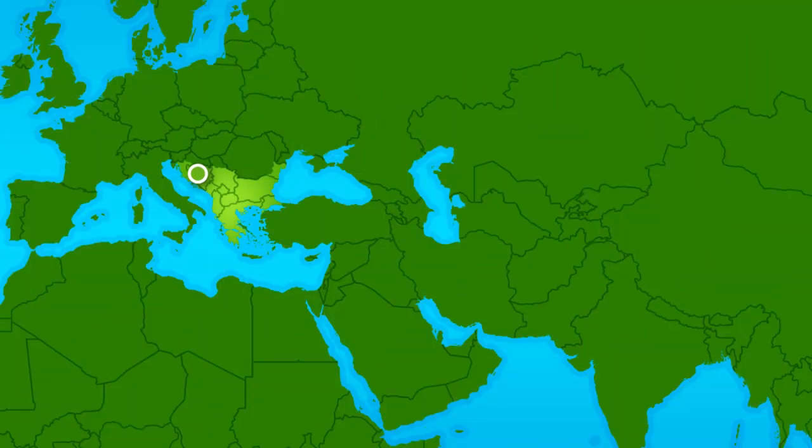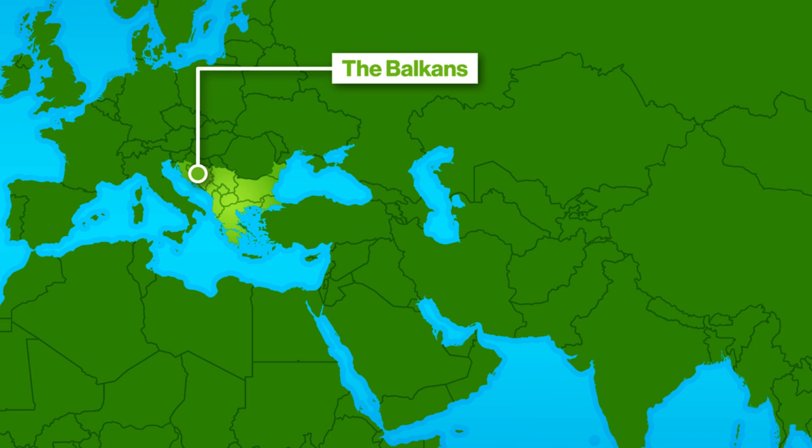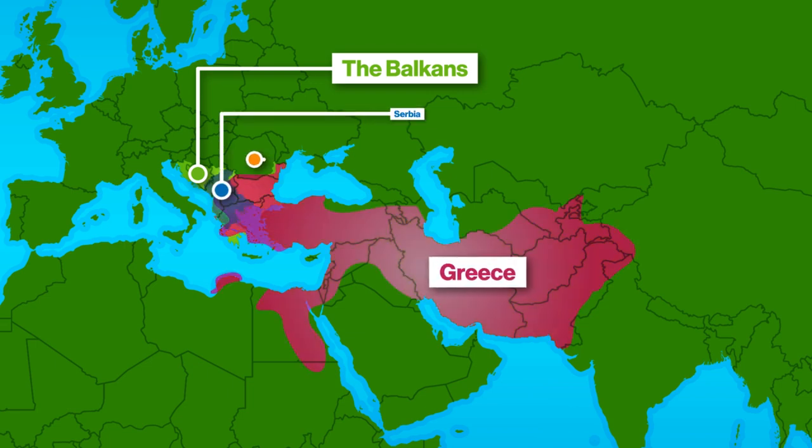One after another, nations in the European part of the Ottoman Empire began to break away, supported by rival European empires like Russia and Habsburg-ruled Austria-Hungary, who hoped to take over these fledgling nation states themselves. And these tensions really came to a head in the region known as the Balkans. The Balkans had historically been ruled by the Habsburgs and the Ottomans. As the Ottoman Empire declined, a lot of new countries popped up in this region, including Greece, Serbia, and Bulgaria.